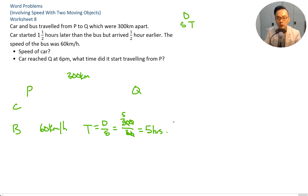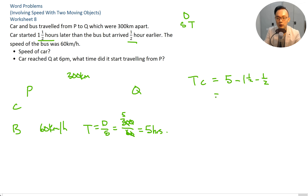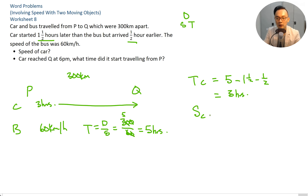The bus took 5 hours. The car started one and a half hours later but arrived half an hour earlier, so the car's time equals 5 minus 1.5 minus 0.5, which equals 3 hours. Speed of the car equals distance over time: 300 over 3, which is 100 kilometers per hour.